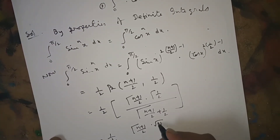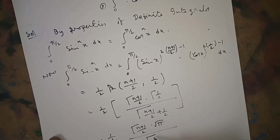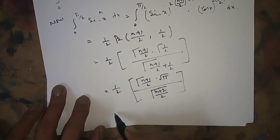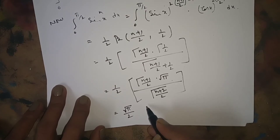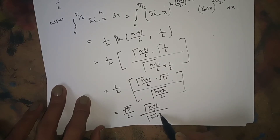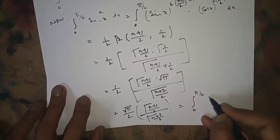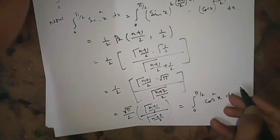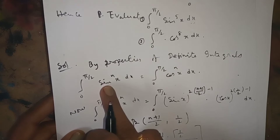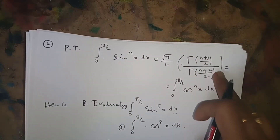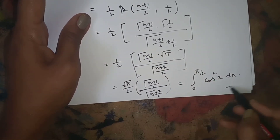Using γ(1/2) = √π, and substituting m = (n+1)/2 and n = 1/2, the denominator becomes Γ((n+1)/2 + 1/2) = Γ((n+2)/2). Writing √π outside gives: √π/2 · Γ((n+1)/2) / Γ((n+2)/2). This equals the integral from 0 to π/2 of cos^n(x) dx, by the definite integral property used earlier. Thus the formula is proved.